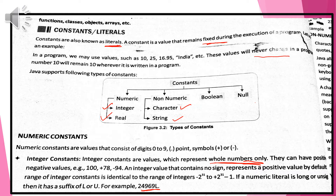If you want to represent any negative number, the negative symbol we have to use. The range of integer constant is from minus 2 to the power 31 to plus 2 to the power 31 minus 1. So, you only need to remember that integer constants are whole numbers, positive to negative.